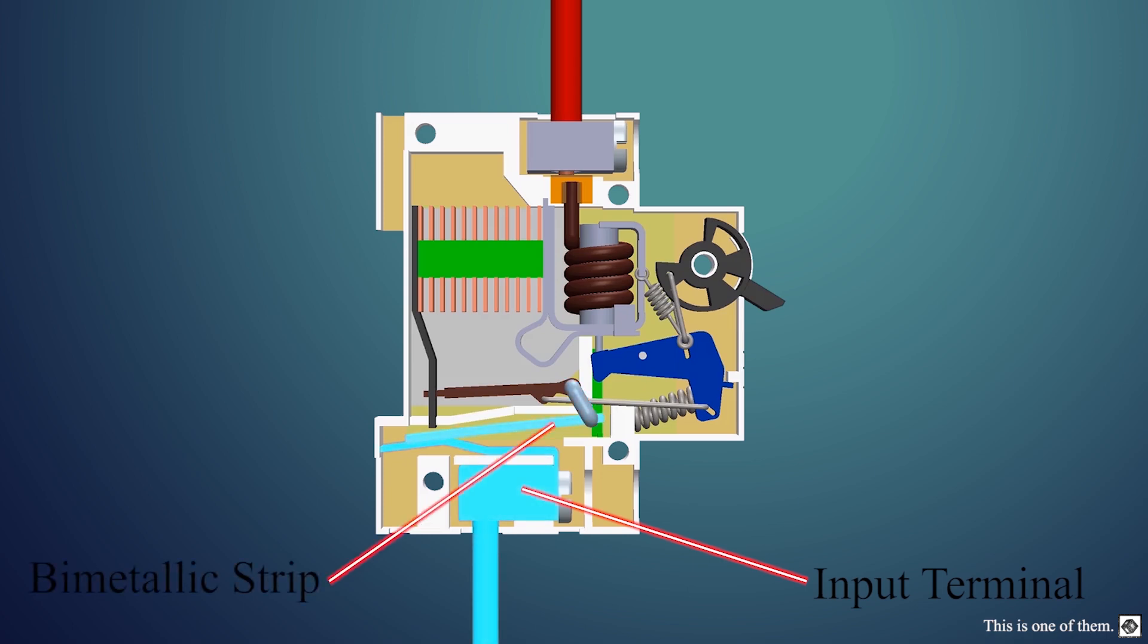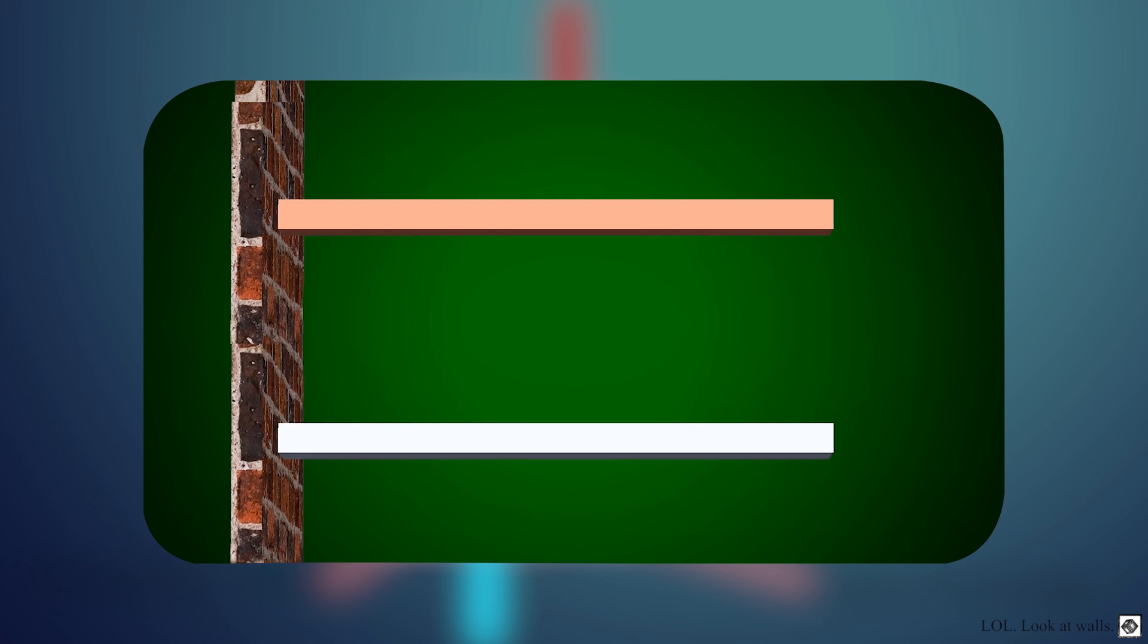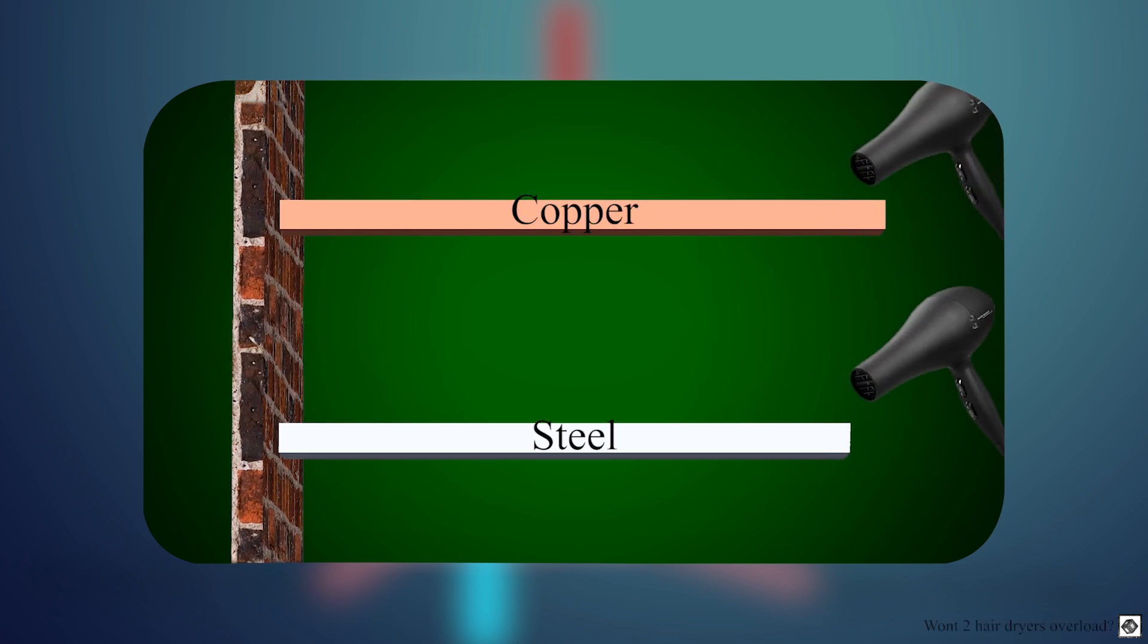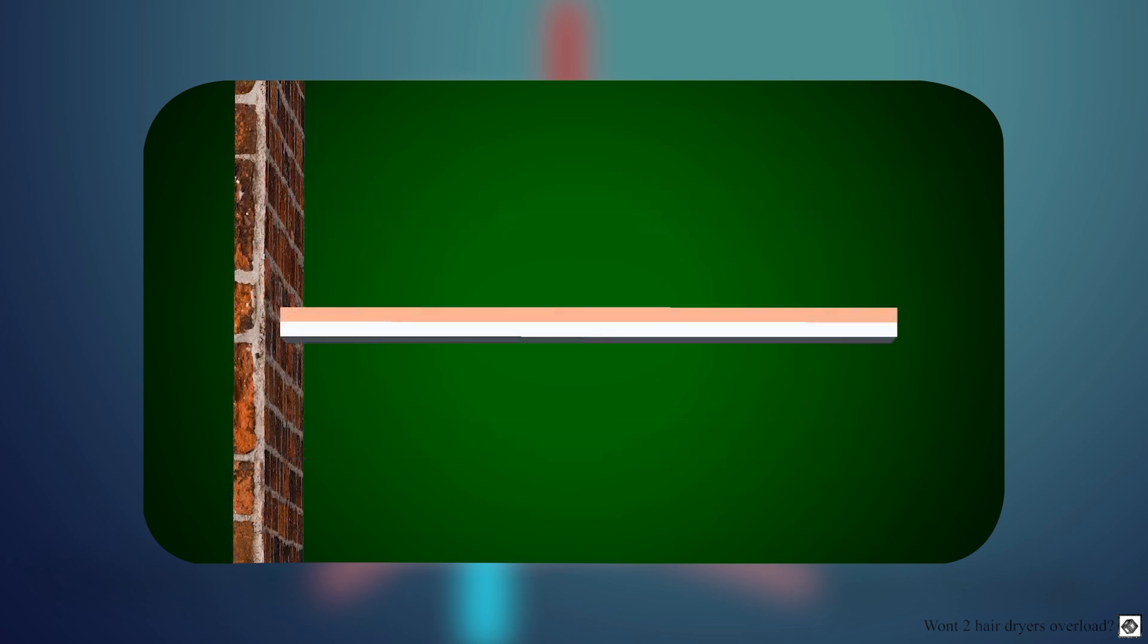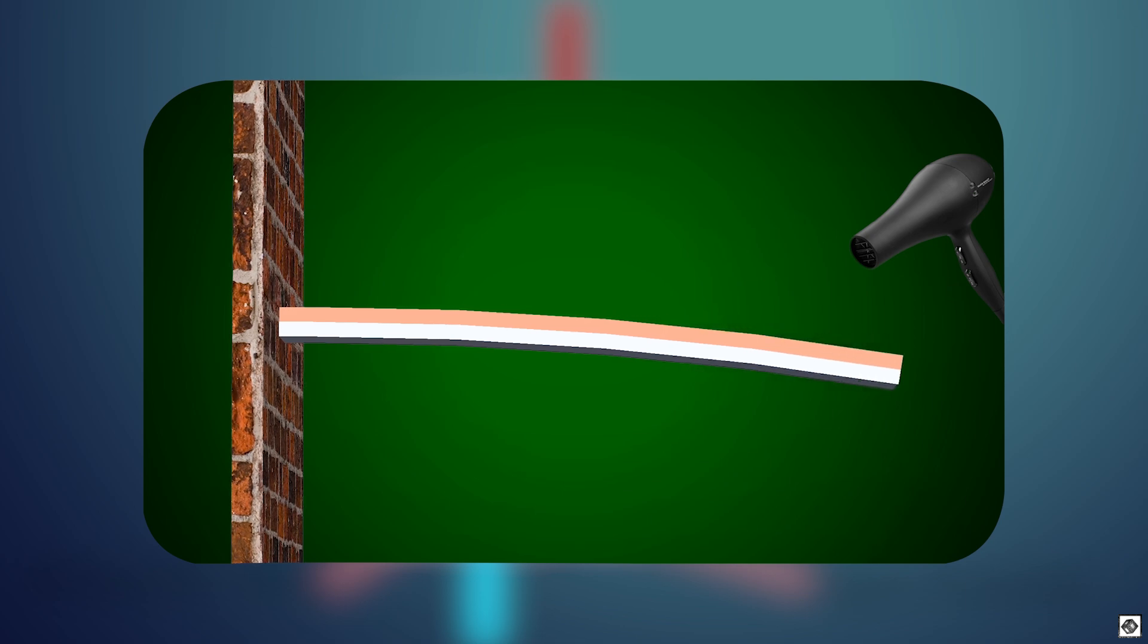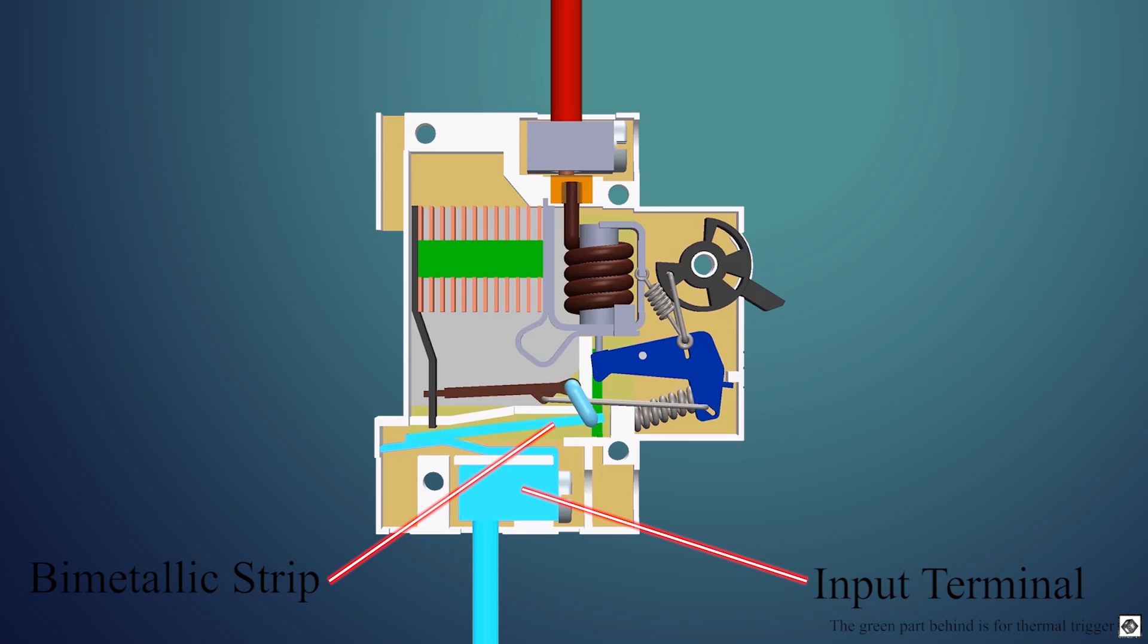Then we have a bimetallic strip. This strip is made of two different metals. When metals are heated, they expand, and different metals expand at different rates. So when we heat two different metals that are joined, they bend because one metal wants to expand more than the other. The heat to expand and bend can be generated by flowing a current, as is the case in an MCB.